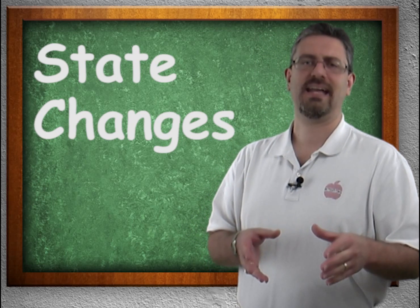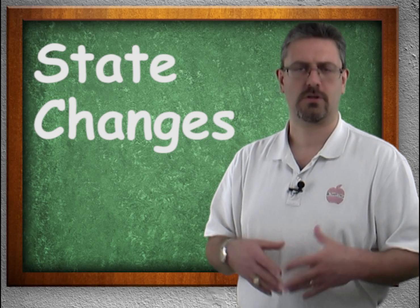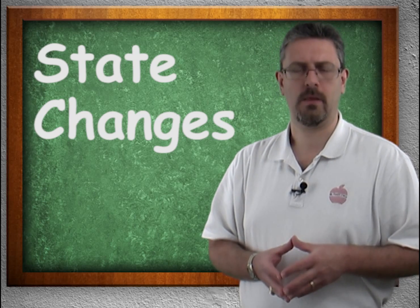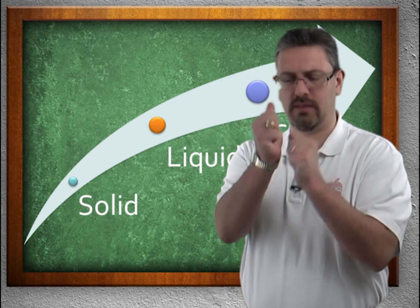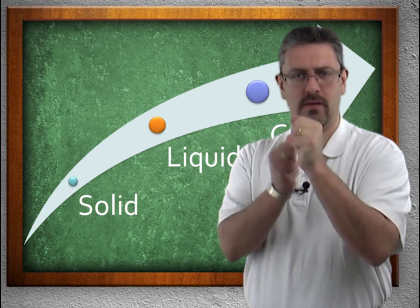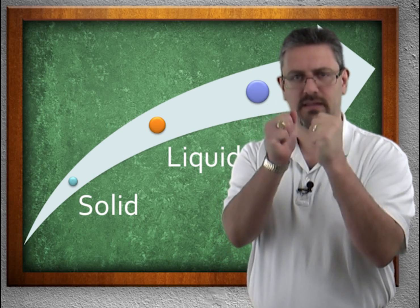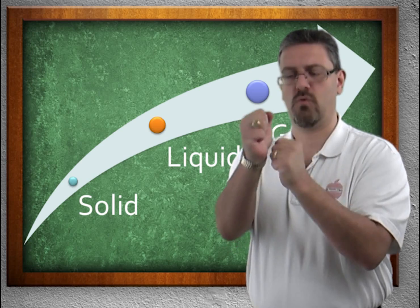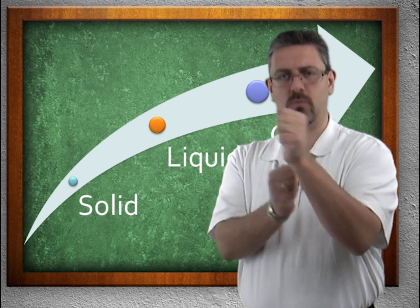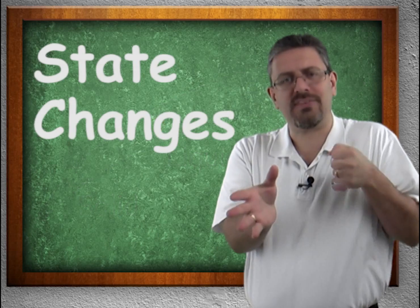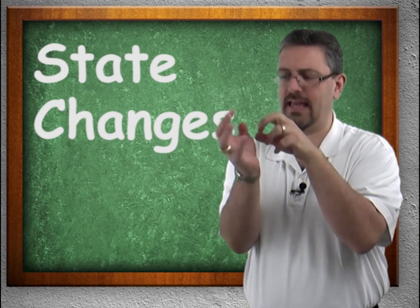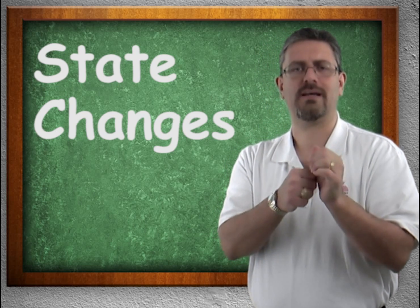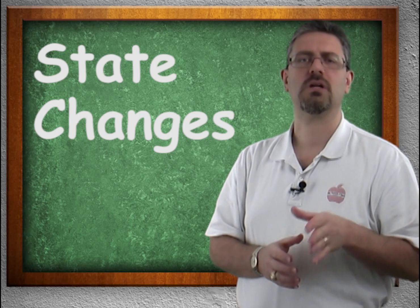We can change the state of matter. These are called state changes, and it all involves either the addition or the removal of energy. When we add energy, the molecules get more and more crazy, more and more wild. We add energy, the solid will move more until it becomes a liquid. A liquid will move more until it becomes a gas. Pulling out that energy, gas slows down to a liquid. Pull out more energy, it turns into a solid. A state change involves the addition or the removal of energy.